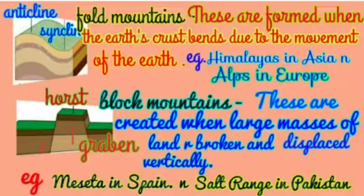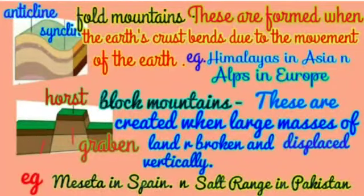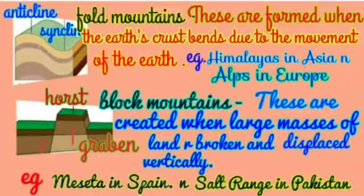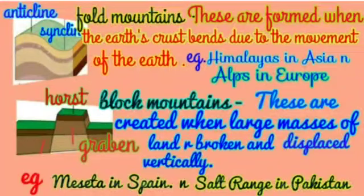Next we will revise the different types of mountains: fold mountains, block mountains, and volcanic mountains. Fold mountains are formed when the earth's crust bends due to the movement of the earth. The upraised part of the fold is known as the anticline, while the downward fold is called the syncline. These mountains consist of parallel ranges. The highest and most popular mountain chains — the Himalayas, the Andes, the Alps, and the Appalachian chains — are all fold mountains.